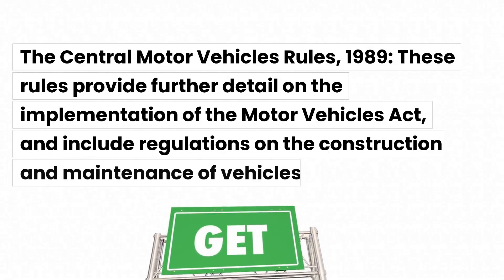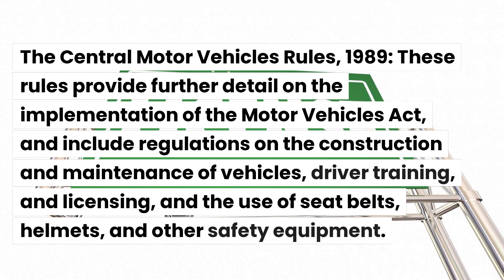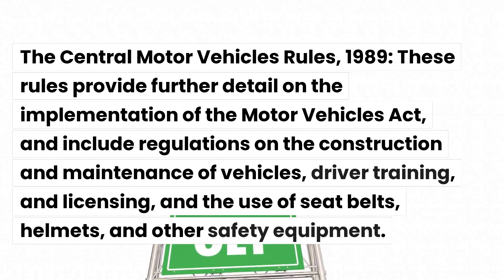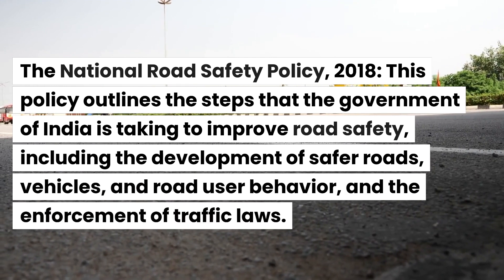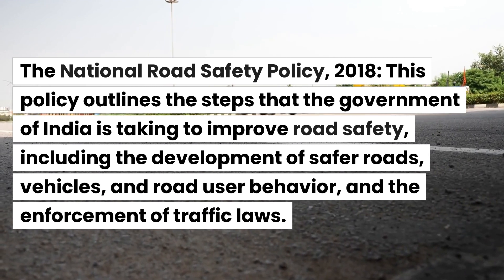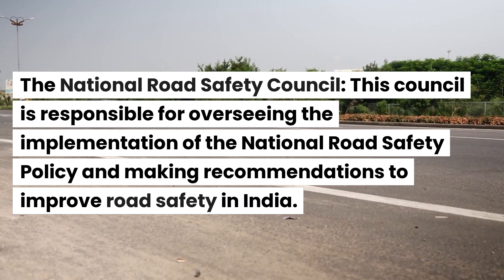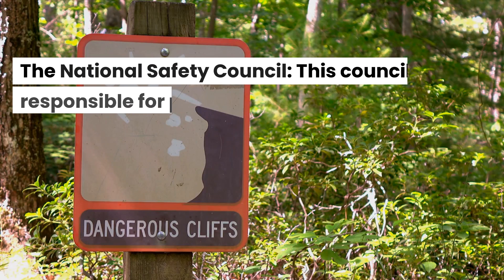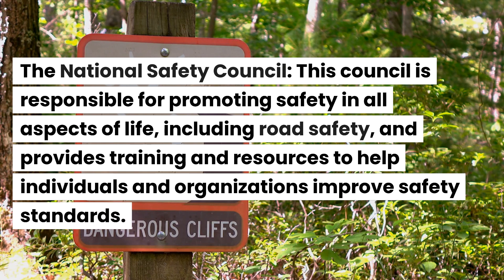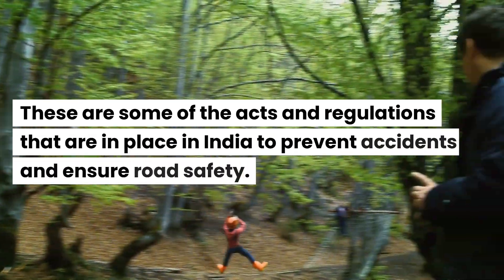The Central Motor Vehicles Rules, 1989 provide further detail on the implementation of the Motor Vehicles Act, and include regulations on the construction and maintenance of vehicles, driver training and licensing, and the use of seat belts, helmets, and other safety equipment. The National Road Safety Policy, 2018 outlines the steps the government of India is taking to improve road safety, including the development of safer roads, vehicles, and road user behavior, and the enforcement of traffic laws. The National Road Safety Council oversees the implementation of this policy, while the National Safety Council promotes safety in all aspects of life and provides training and resources to improve safety standards.